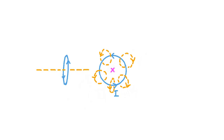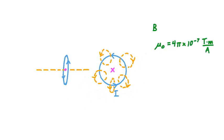If we were looking at this loop from the side, we're interested in the magnetic field strength at this point here. That field magnitude, capital B, depends on a few different factors. Like most equations for magnetic field strength, it depends on mu-naught, known as the permeability of free space — a universal constant that measures the resistance of free space, a vacuum, to the formation of a magnetic field in it. The value of mu-naught is 4 times pi times 10 to the negative 7th tesla meters per ampere.